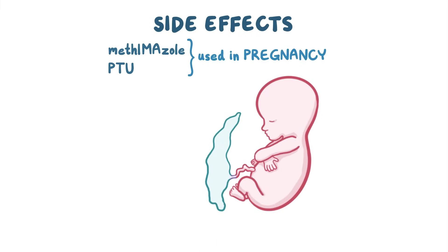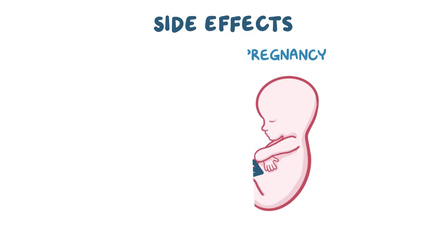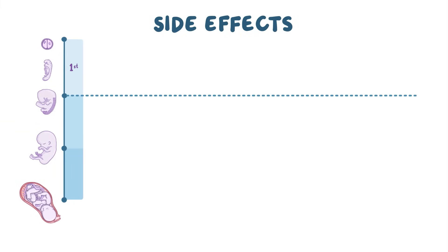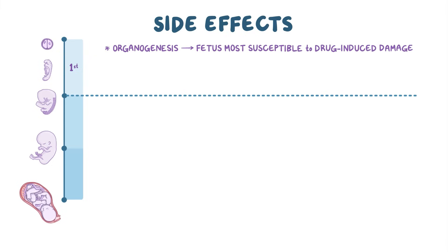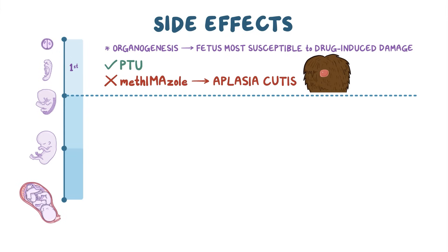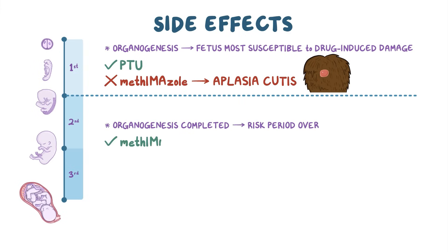It's important to note that both methimazole and PTU are used in pregnancy, even though they can cross the placenta. During the first trimester, during organogenesis, when the fetus is most susceptible to drug-induced damage, the medication of choice is propylthiouracil, since it's less likely to cross the placenta due to its extensive plasma protein binding. On the other hand, methimazole is contraindicated during the first trimester because it is associated with aplasia cutis, a condition characterized by the absence of a portion of skin. During the second and third trimesters, once organogenesis is completed and the risk period is over, methimazole is the preferred medication due to propylthiouracil's risk of hepatotoxicity.